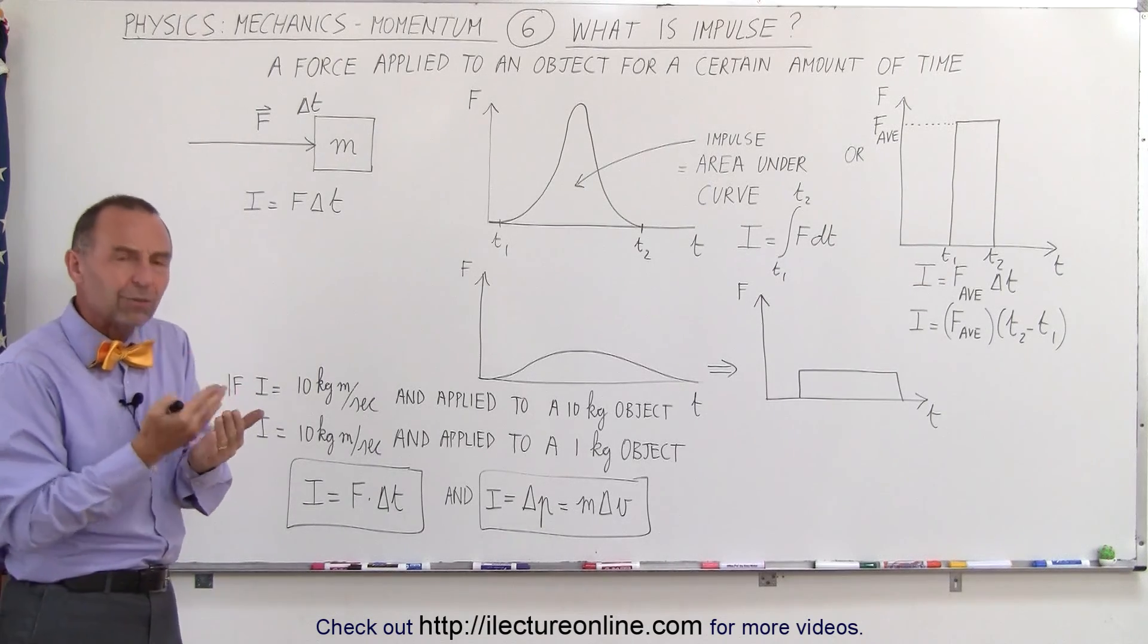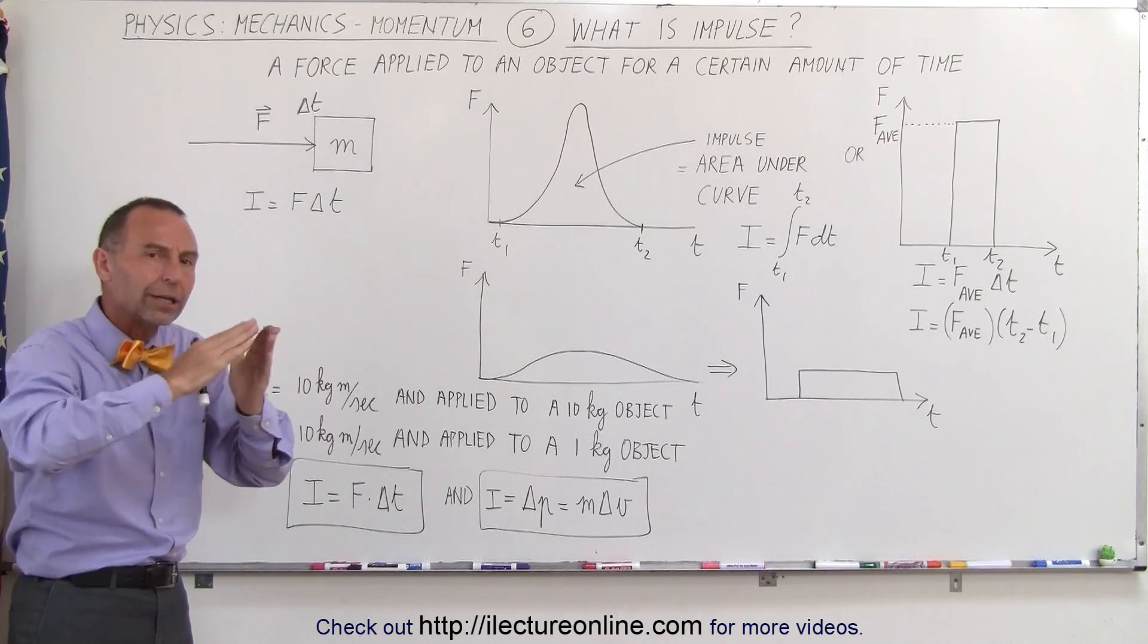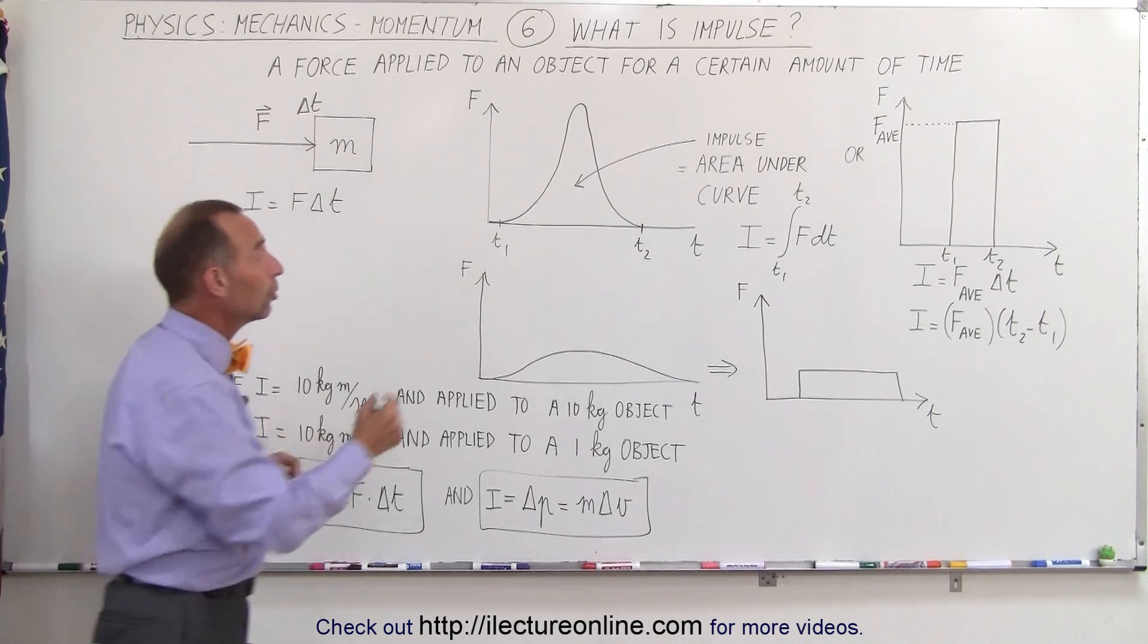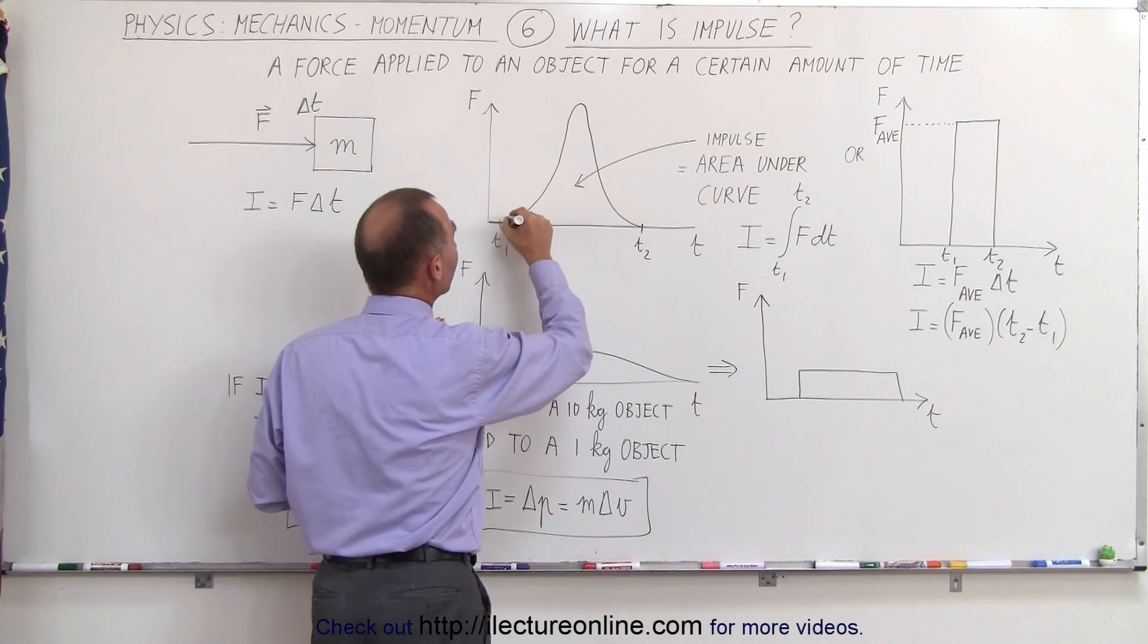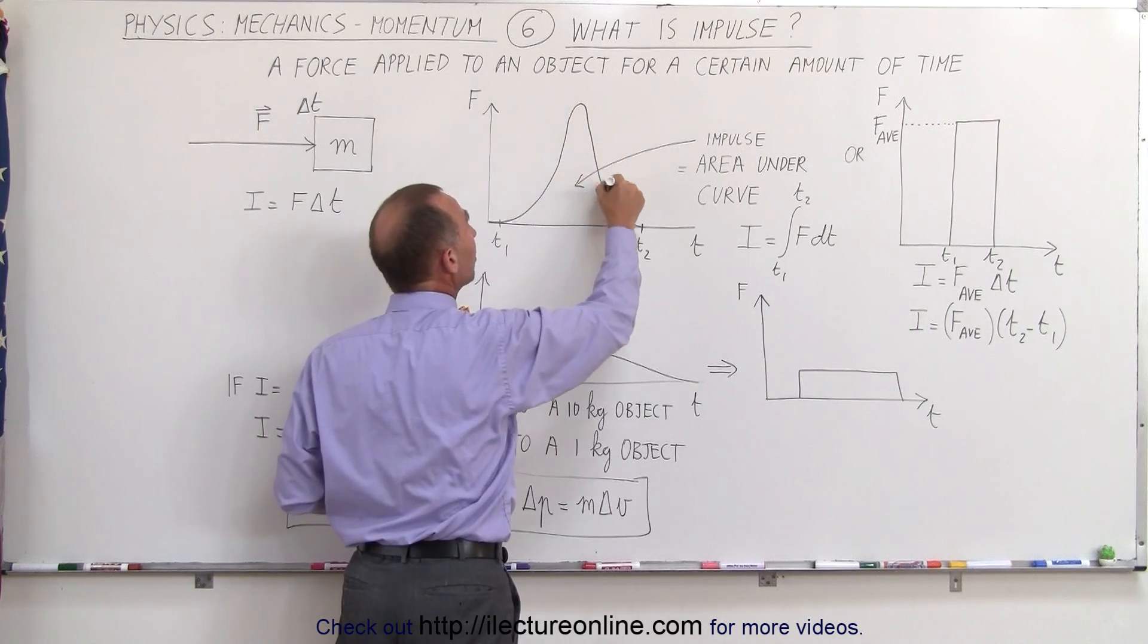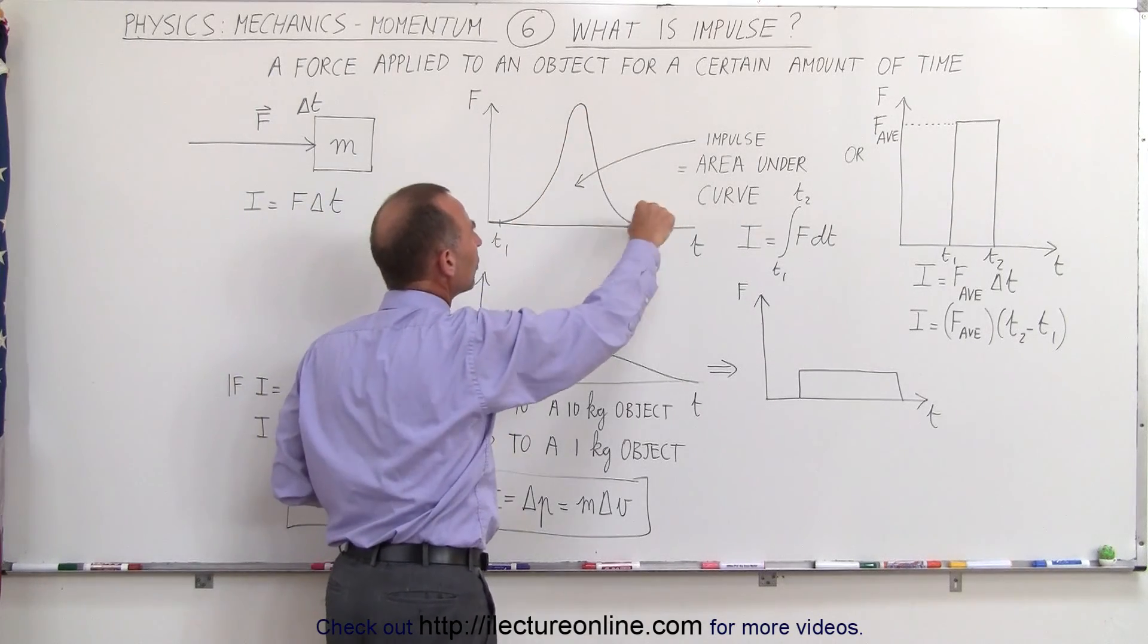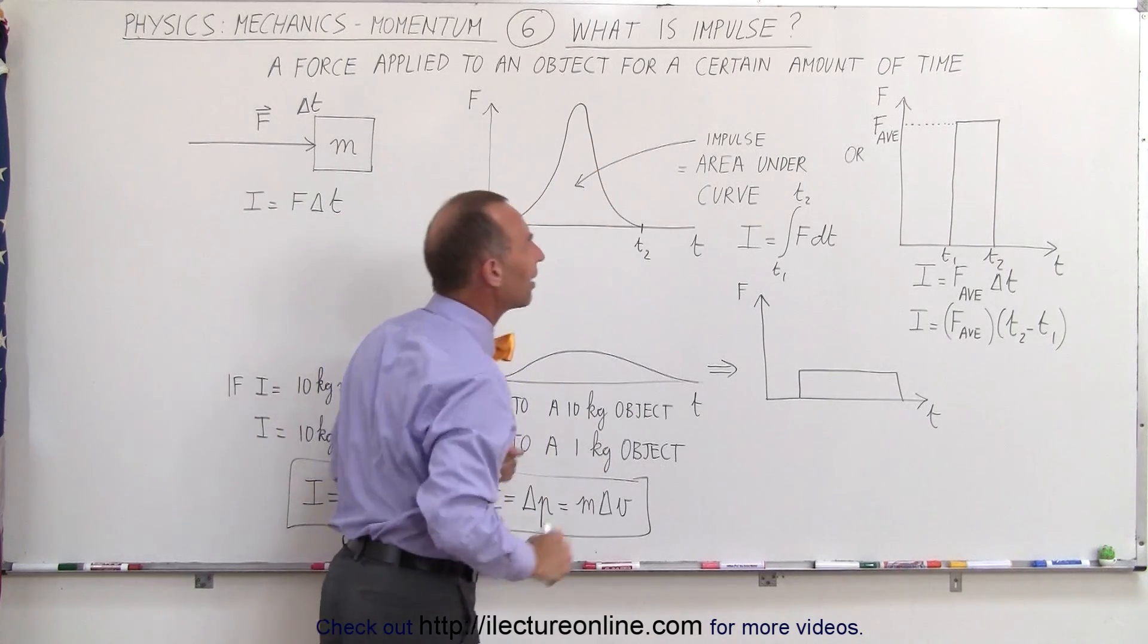So imagine a baseball bat hitting a baseball. It first makes contact, it pushes hard and hard and hard against the ball, the ball changes direction, the contact lessens, and then there's no longer contact between the two objects. So you can imagine that over time, from T1 to T2, the contact force increases, increases, increases, reaches a maximum value, then begins to decrease, and then the contact is lost, and the ball is now traveling in the opposite direction. So you can see that during the contact, there's a change in the force, it reaches the maximum, goes back to zero over a certain amount of time.